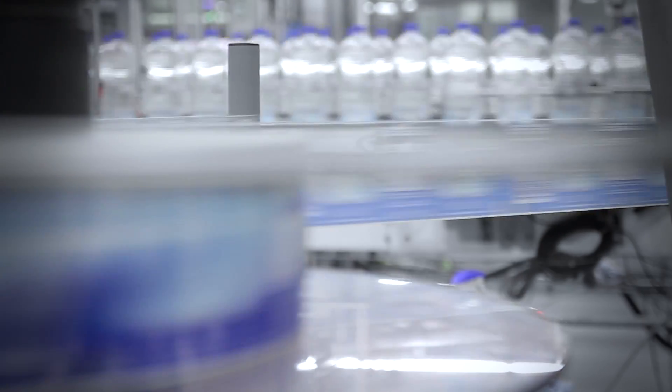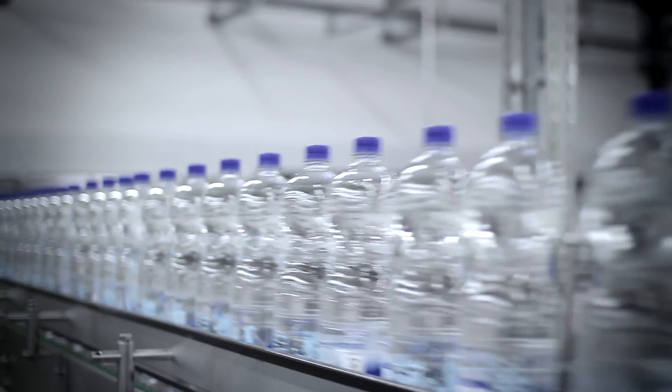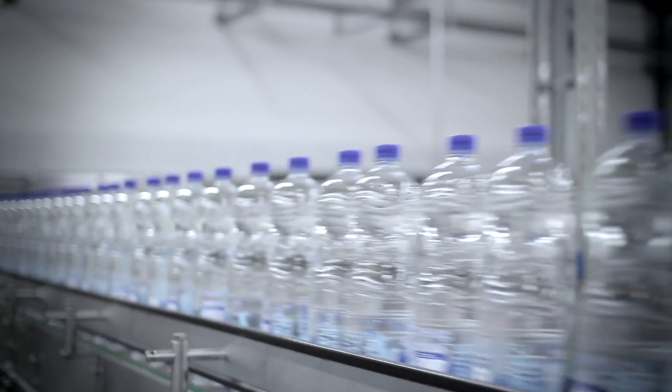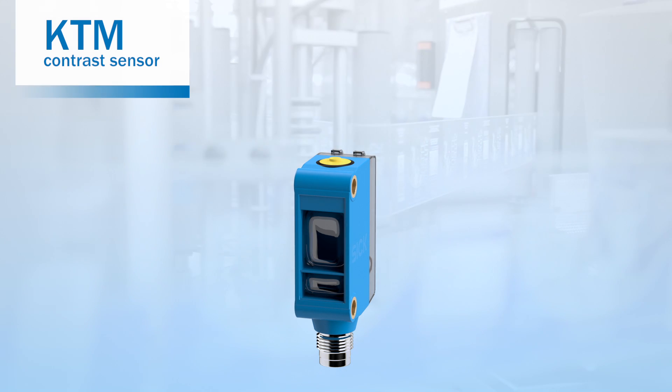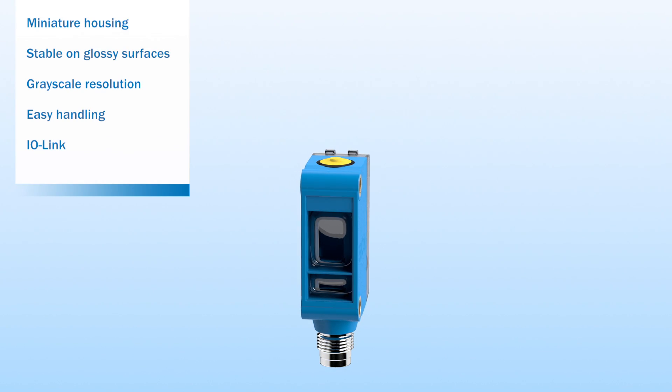In the packaging industry, processes such as cutting, punching or alignment are controlled by print marks on rolls of film. The KTM contrast sensor combines a number of advantages and innovations.